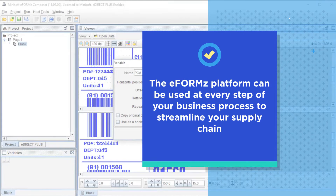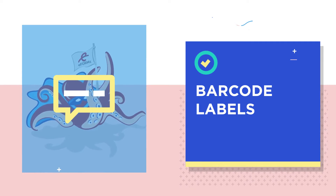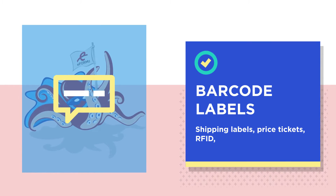Use eForms to create shipping labels, price tickets, product labels, RFID tags, QR codes, GS1128 labels, or any 1D or 2D barcodes.